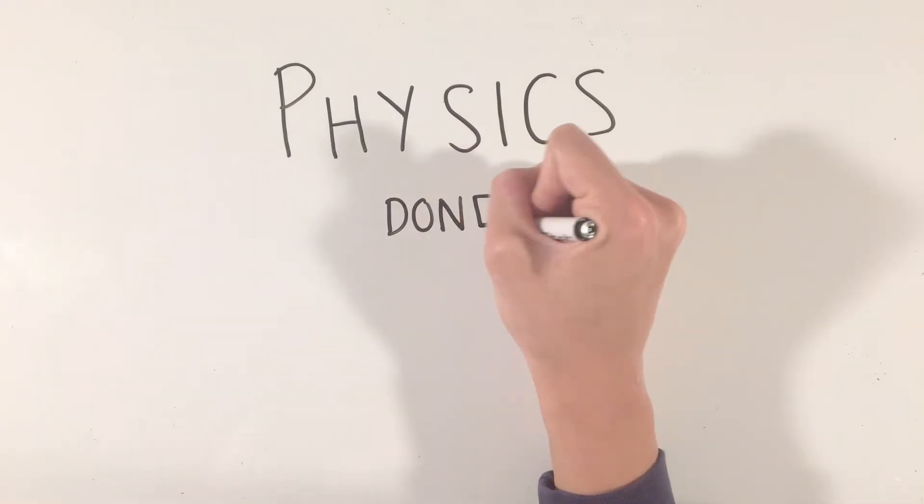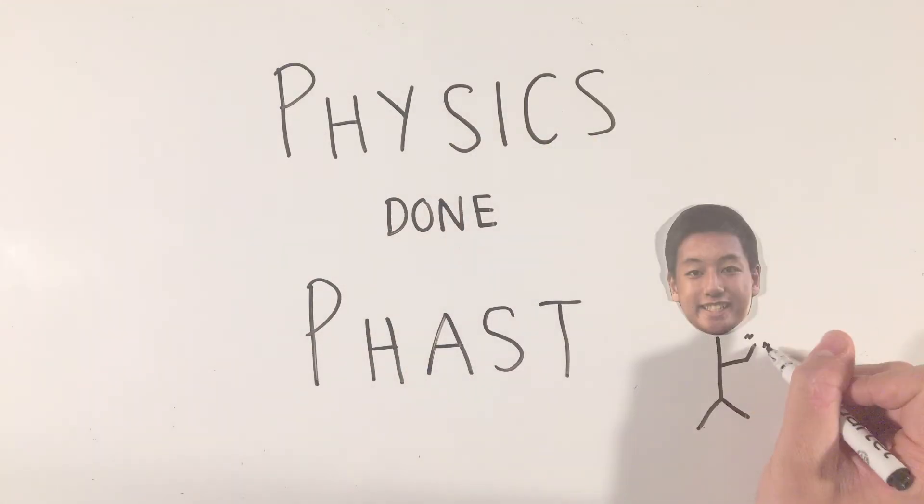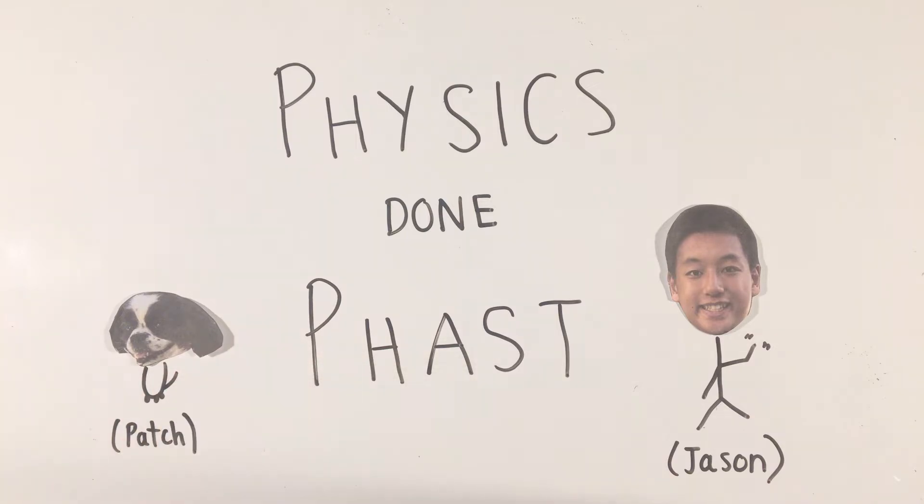While we are all hopefully comfortable with the simple DC circuits from AP Physics 1, what happens when we introduce capacitors or inductors into circuits? Before diving into the basics of RC and RL circuits, let's first quickly review the basics of circuit components.